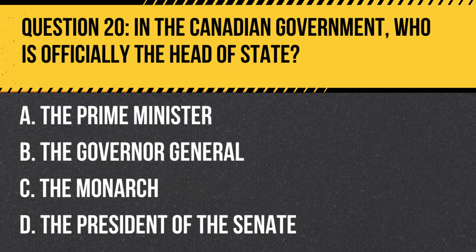Question 20. In the Canadian government, who is officially the head of state? A. The Prime Minister. B. The Governor-General. C. The Monarch. D. The President of the Senate.